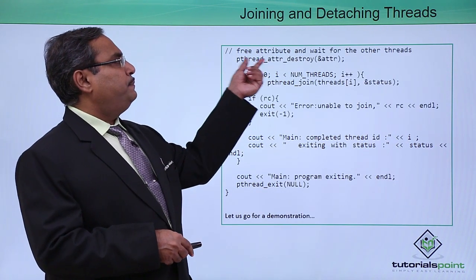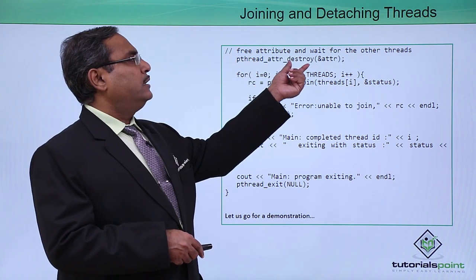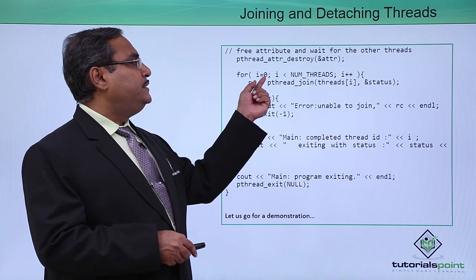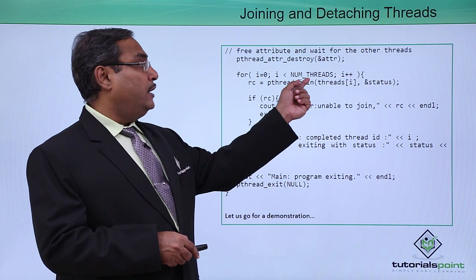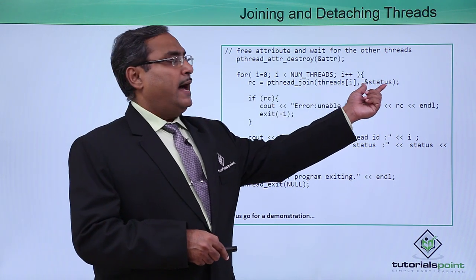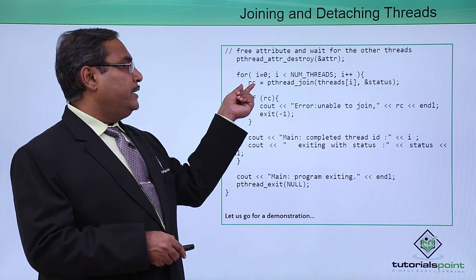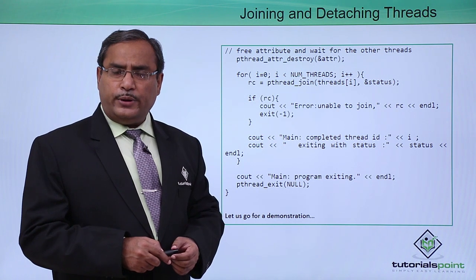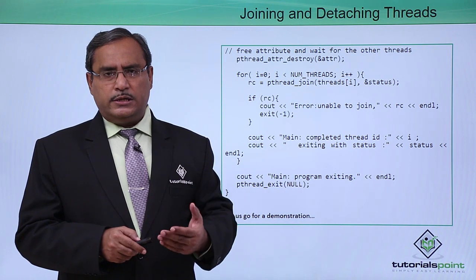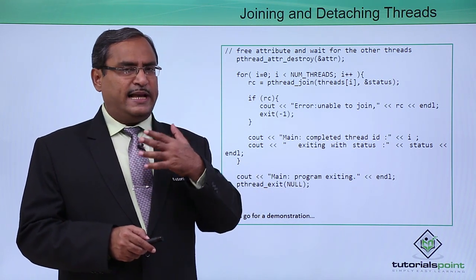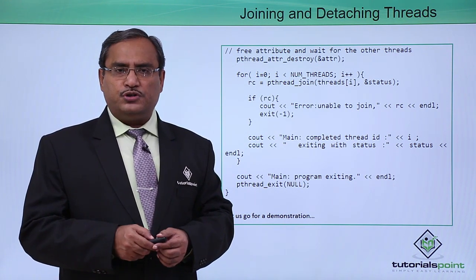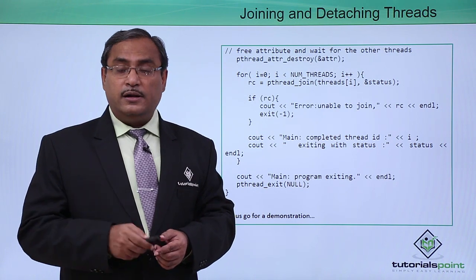Next, pthread_attr_destroy is called, passing the reference of the attr variable. Then, in a loop from 0 to 4, pthread_join is called with threads[i] and ampersand-status, returning rc and executing accordingly. It will be better to go for execution of the code, so let us type the program on the editor, compile it, run it, and explain the output for better understanding.